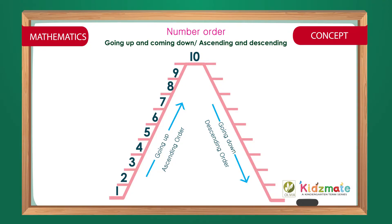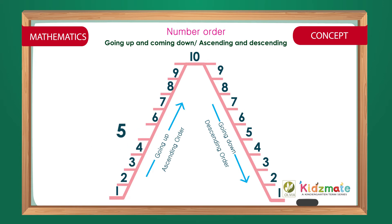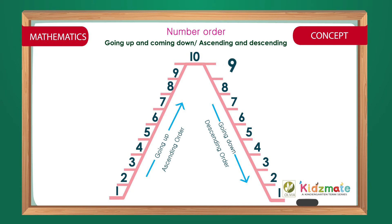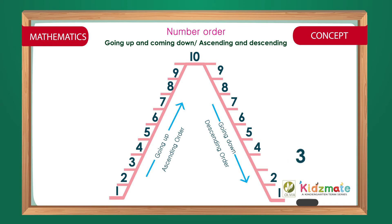Number order going up and coming down, or ascending and descending. 1 2 3 4 5 6 7 8 9 10 9 8 7 6 5 4 3 2 1.